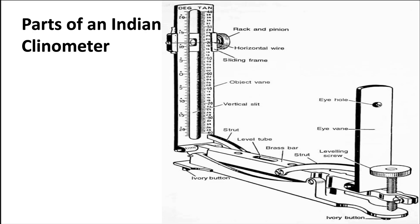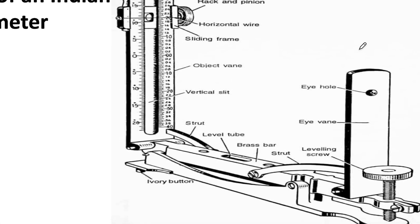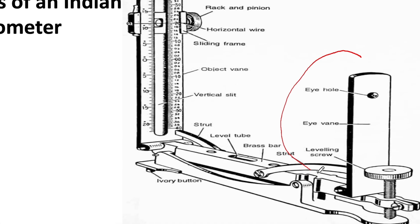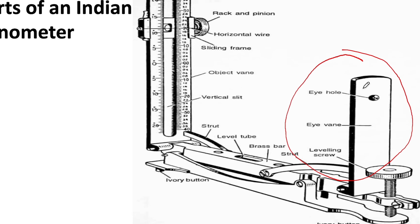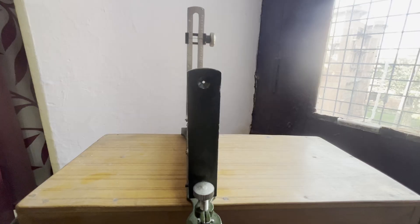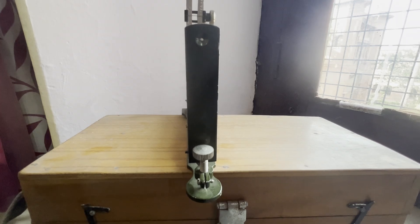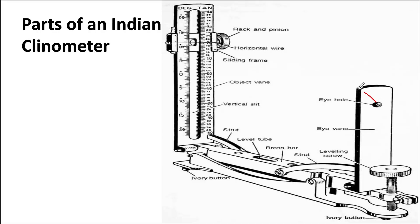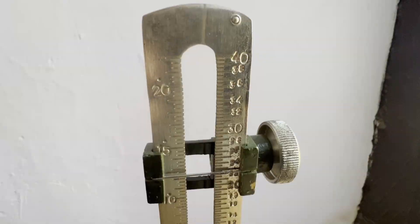Parts of an Indian Clinometer: The Indian Clinometer consists of the following parts. It has an eye vane with an eyehole used to sight the objects. From this eyehole, we view the object through the object vane.